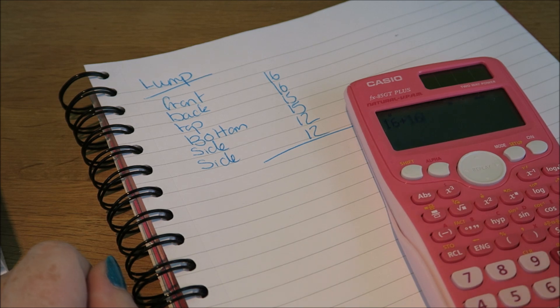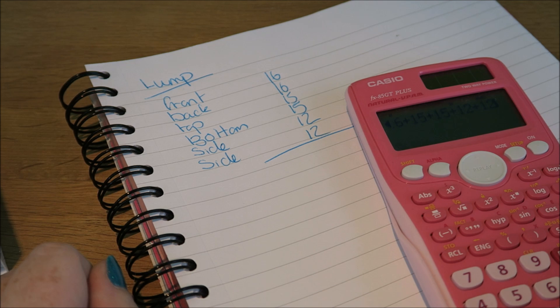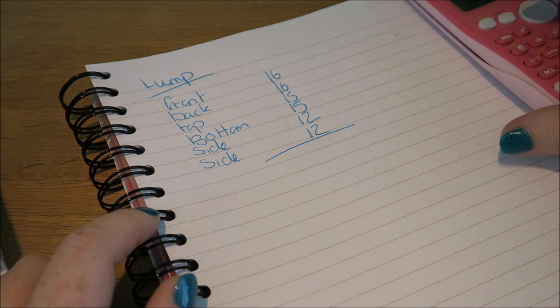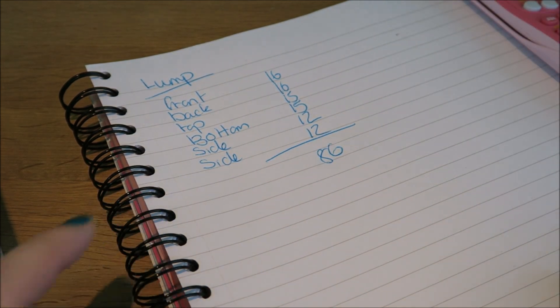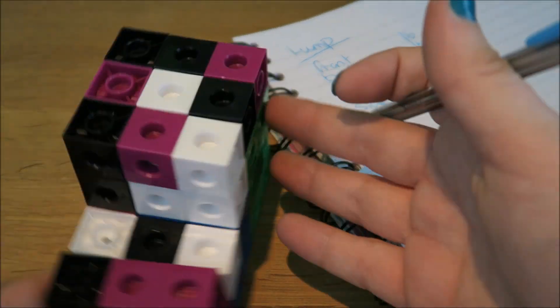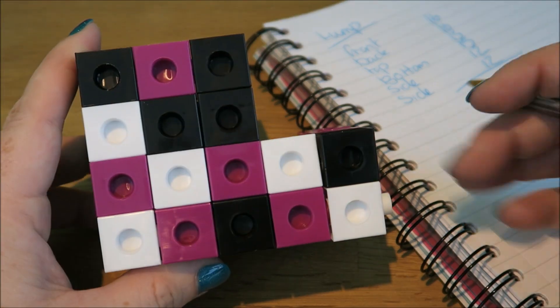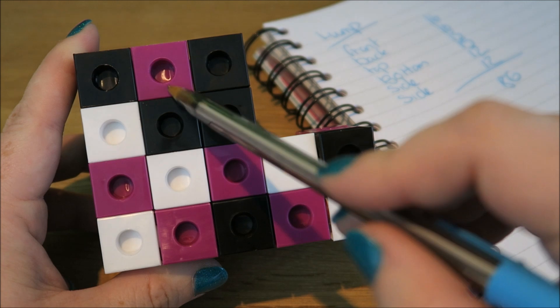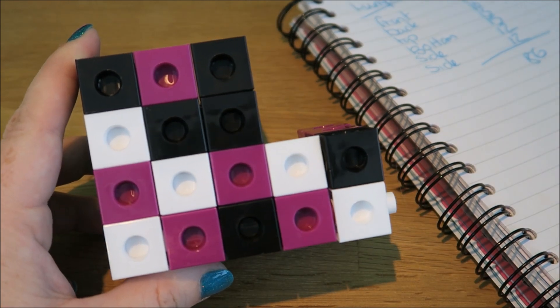16 plus 16 plus 15 plus 15 plus 12 plus 12 equals 86. So this block has 86 available spaces for a reaction to take place.